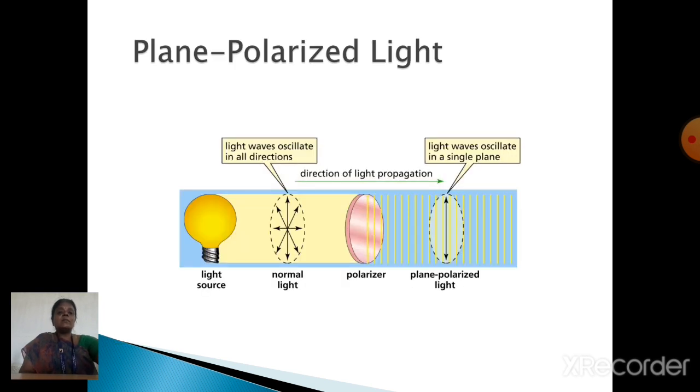Next one is the plane polarized light. For measuring the optical activity of any organic compound, we cannot use ordinary light because ordinary light can oscillate in all directions.